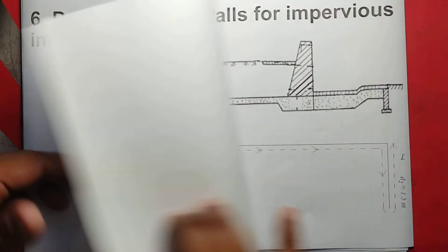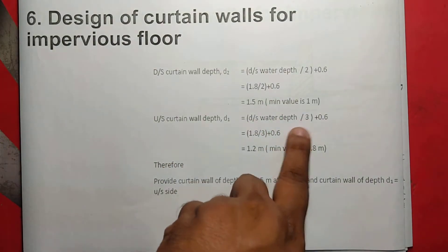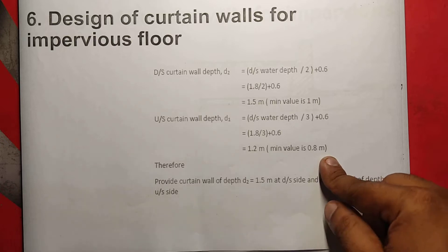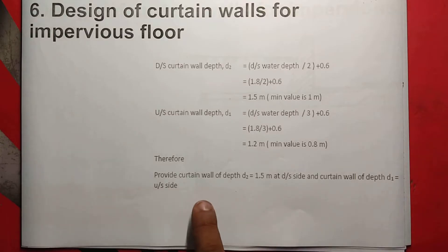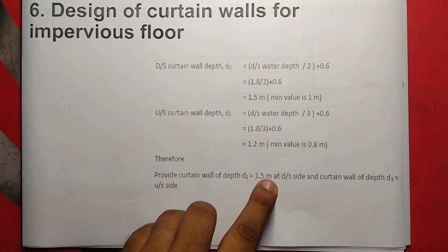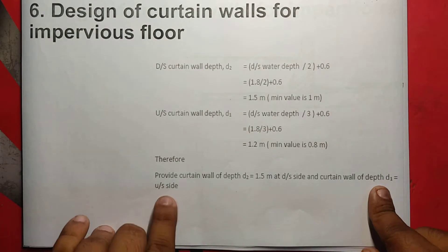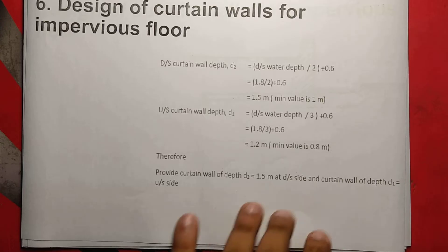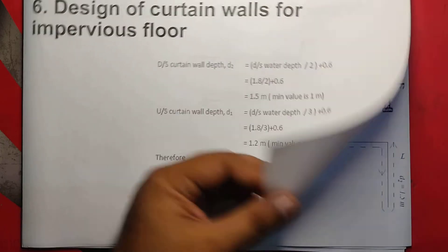Upstream curtain wall: downstream water depth divided by 2 — that is 3 plus 0.6 — which equals 1.8 divided by 3 plus 0.6, equal to 0.6 plus 0.6, which equals 1.2 meters. That is the minimum value. We will take the minimum value of 1.2 meters. Therefore, provide a curtain wall of depth D2 equal to 1.5 meters at downstream side, and D1 equal to 1.2 meters at upstream side.